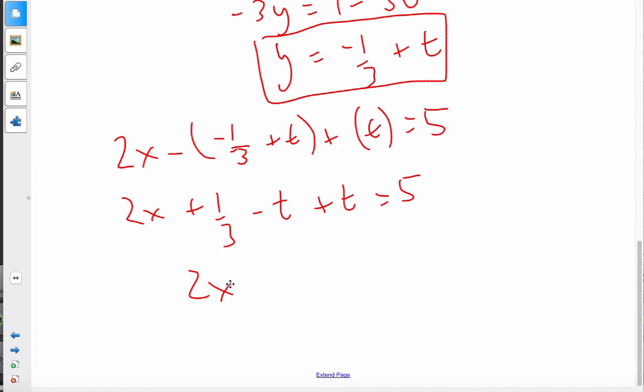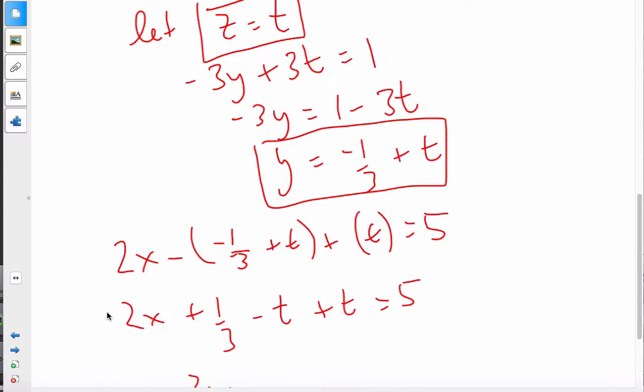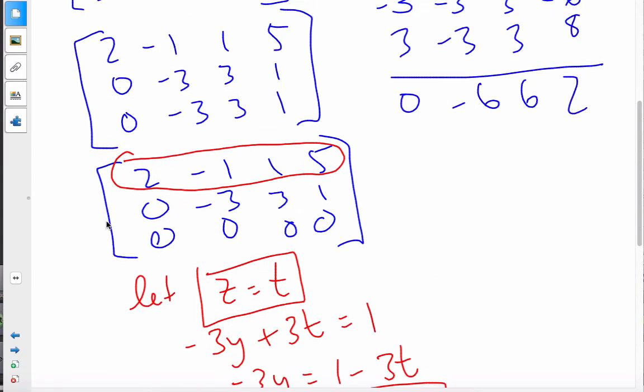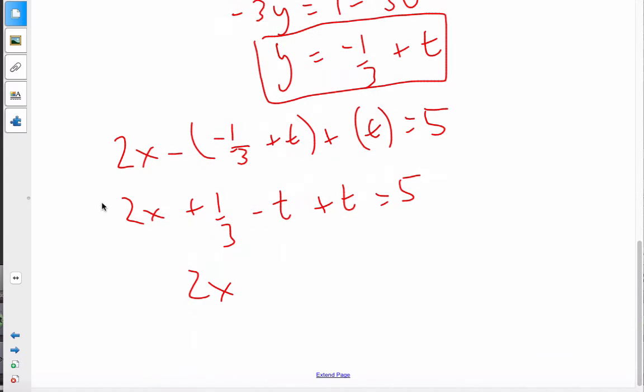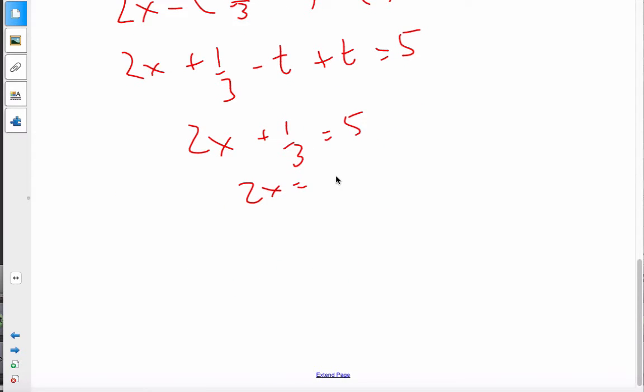2x. Let's make sure I didn't make any computation errors there. My y's do. My t's do cancel out. So I get plus 1 third is equal to 5. 2x is equal to 5 minus 1 third is 14 thirds. And x is 7 over 3.